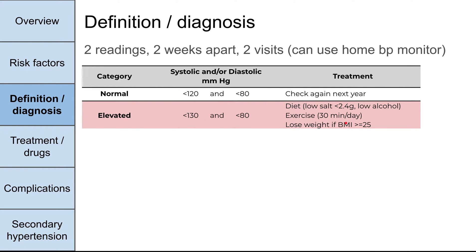Let's go through the definition and staging. In order to diagnose hypertension, you need two readings at least two weeks apart on two separate occasions. You can also use a home blood pressure monitor as part of these two readings. Normal blood pressure is defined as a systolic blood pressure less than 120 and a diastolic blood pressure less than 80. There's no treatment for this — you screen again next year when the person comes in for their next physical.